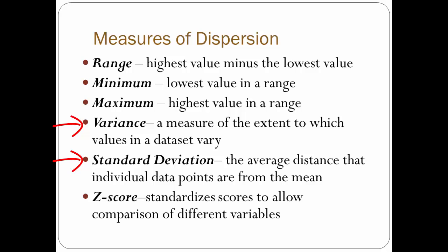These statistics relate to the entire dataset. Z-scores, however, are used to standardize individual scores, or data points, so that we can compare them with other data points in the dataset. You can think of z-scores as measuring a particular score's relationship to the mean in a group of scores.